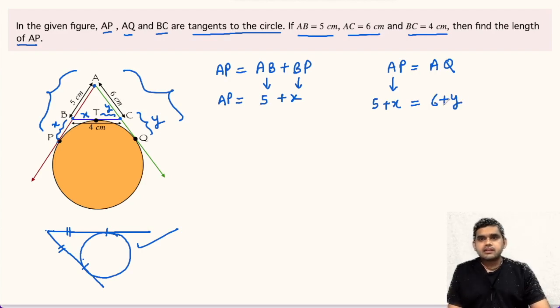From here we can get a relationship between X and Y. We will get X minus Y equals 6 minus 5, that is 1. This is the relationship between X and Y.